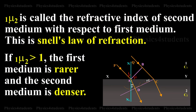1 mu 2 is called the refractive index of second medium with respect to first medium. This is Snell's law of refraction.